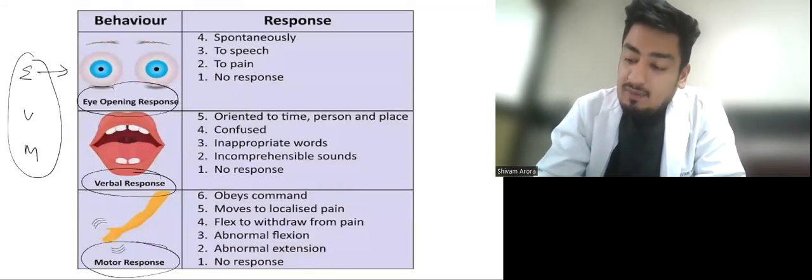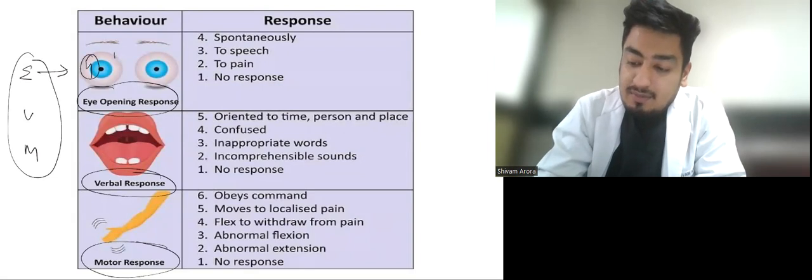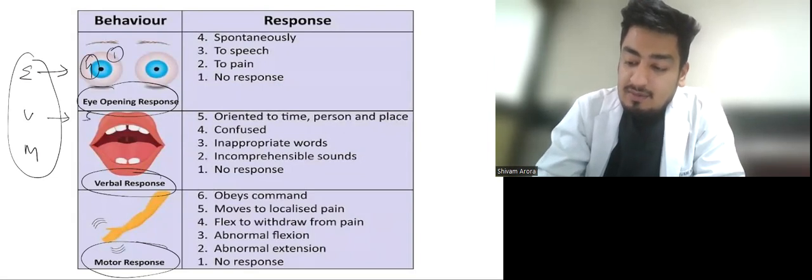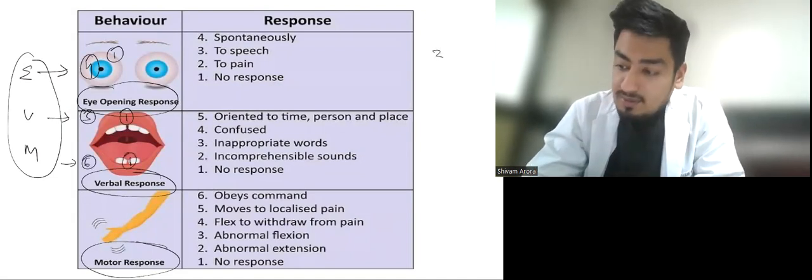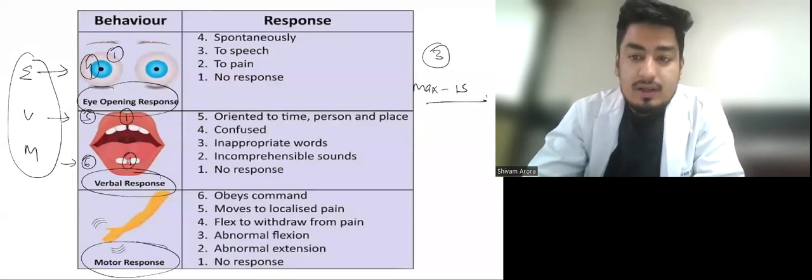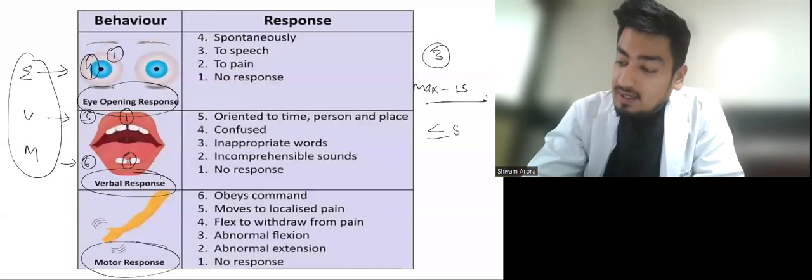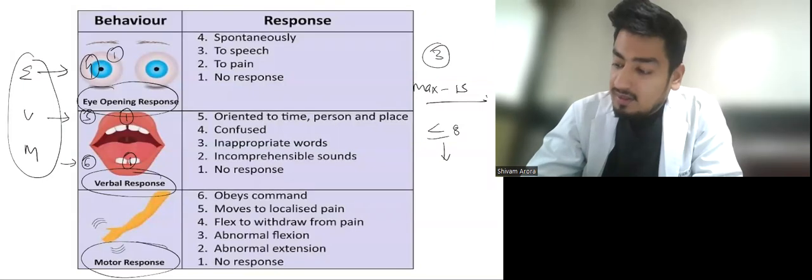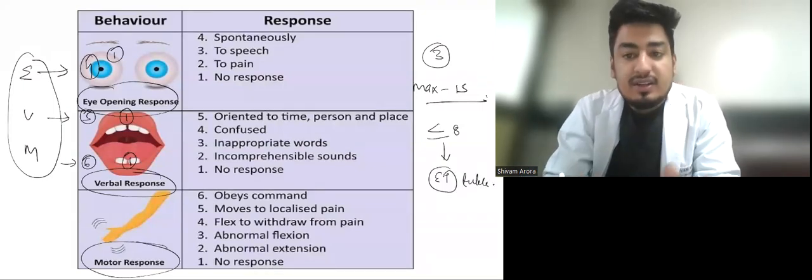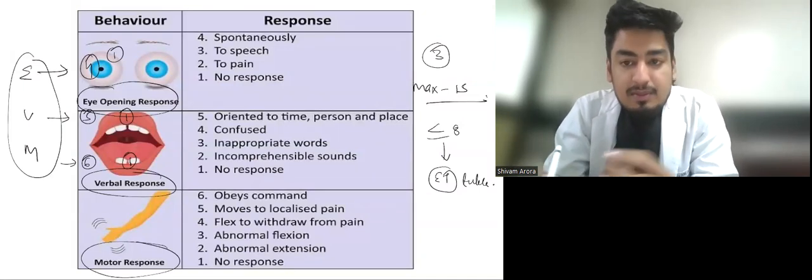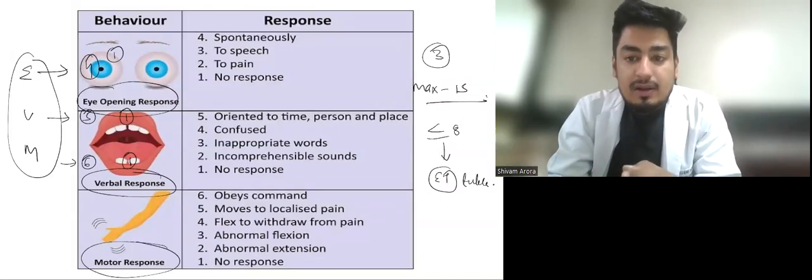In E, maximum four score is there and minimum one. In V, maximum five, minimum one. In motor, maximum six, minimum one. So total minimum score is three and total maximum score is fifteen. Less than or equal to eight GCS is an indication for intubation and mechanical ventilation. When GCS is less than or equal to eight, we have to protect the airways.